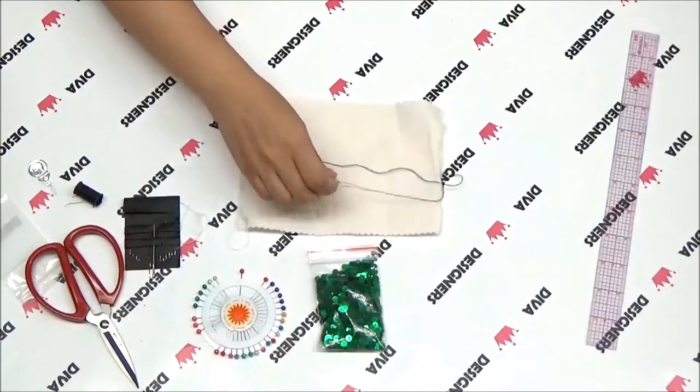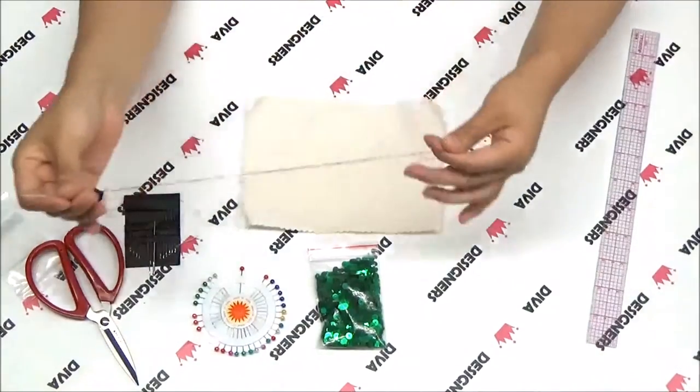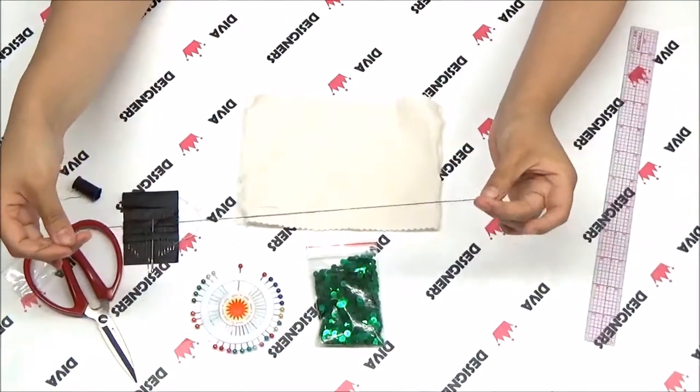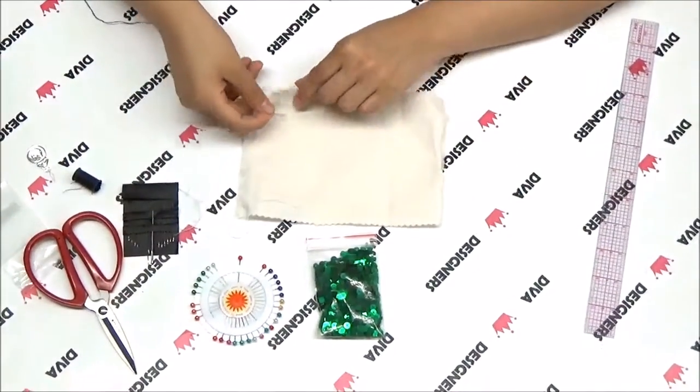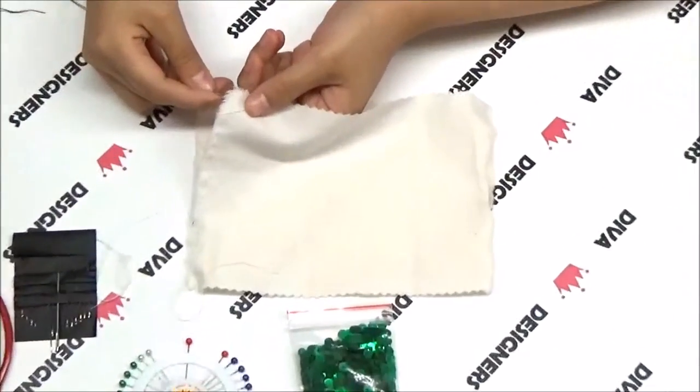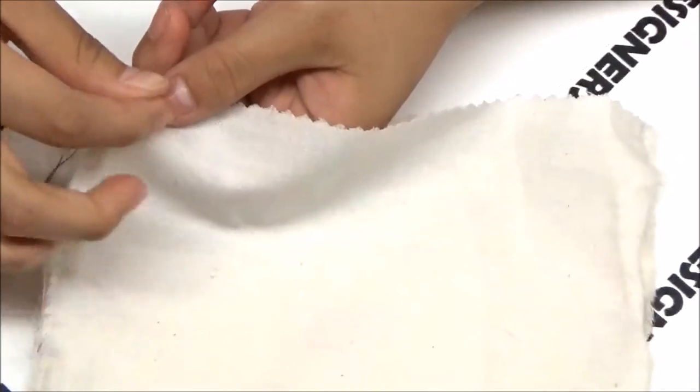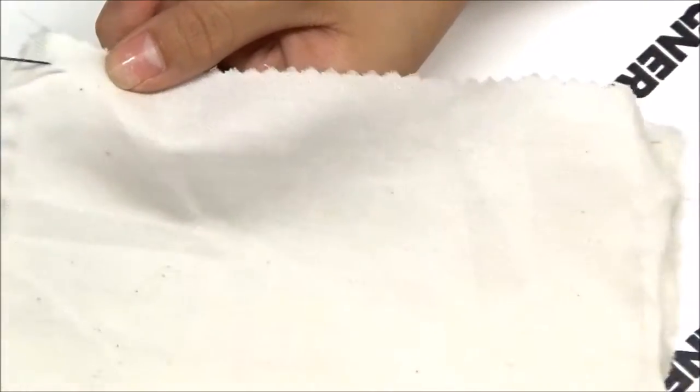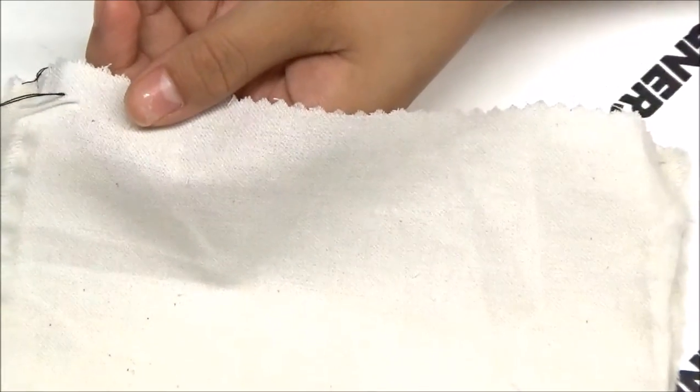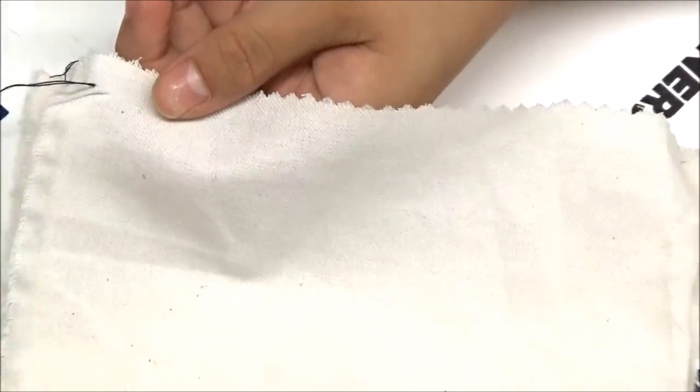First, you need to prepare your needle and thread. Push the needle through the fabric from the back. Pull the thread all the way through the fabric until the knot stops it.